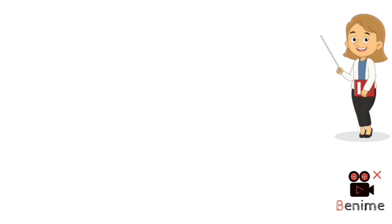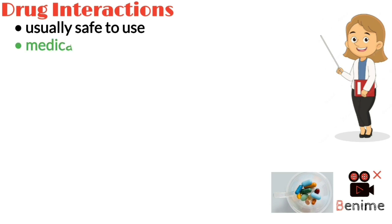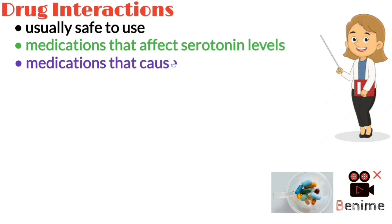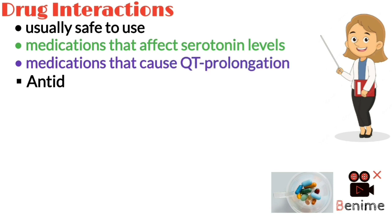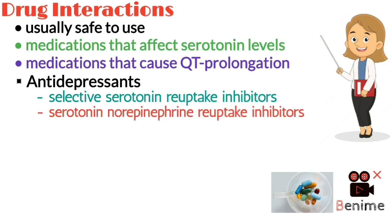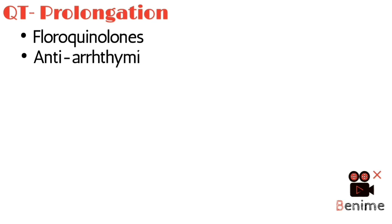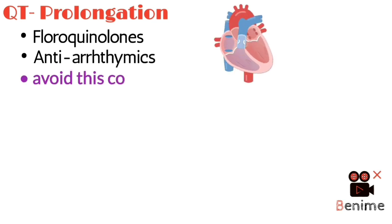Now we are moving towards the end of this video in which we are going to discuss the drug interactions of ondansetron. Ondansetron is usually safe to take but it does interact with some medications. These include medications that affect serotonin levels in the brain and those that cause QT prolongation. These drugs include antidepressants such as SSRIs (selective serotonin reuptake inhibitors), SNRIs (serotonin and norepinephrine reuptake inhibitors), TCAs (tricyclic antidepressants), and tramadol, as they increase the risk of serotonin syndrome. Some antibiotics such as linezolid can also lead to this syndrome if used concurrently. When used with fluoroquinolones and antiarrhythmic drugs, they can lead to QT prolongation, so avoid this combination as well.